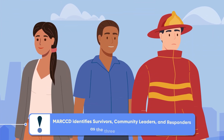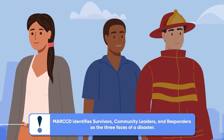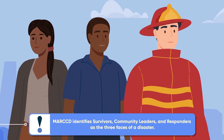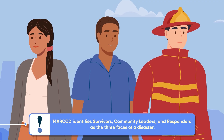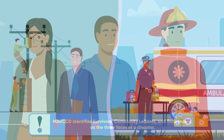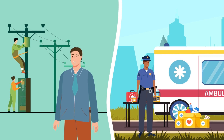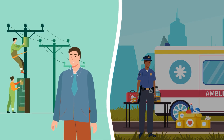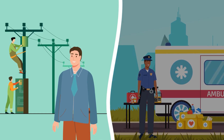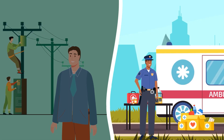MARC-D also identifies three populations in a disaster: survivors, community leaders, and responders — each with unique needs and roles. MARC-D guides effective responses for each phase as well as the different populations. For example, community leaders assess and restore basic functions during adaptation, while responders plan and prepare during anticipation.